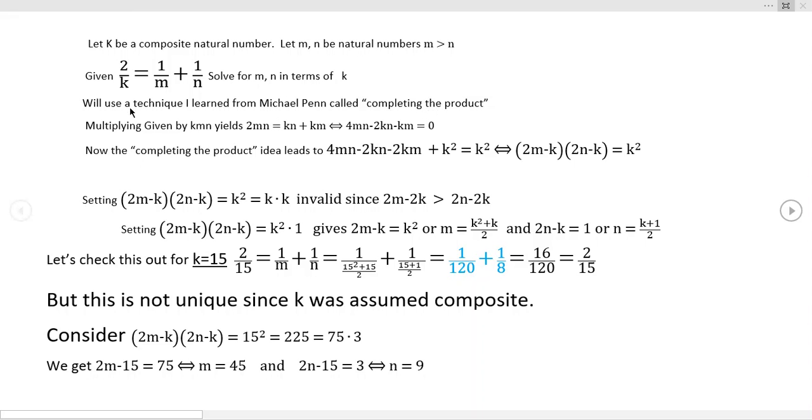If you start with this given right here, 2 over k, where k is composite, and again, I'll repeat the fact that k is composite doesn't even have anything to do with the algebra here. The algebra is the same whether k is prime or k is composite. If you multiply through by kmn right here, you end up with this piece right down here. I'll leave out some of those details. You can see what cancels.